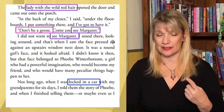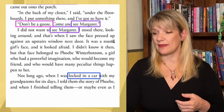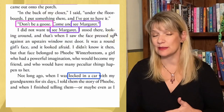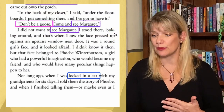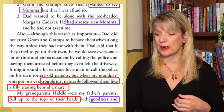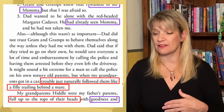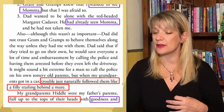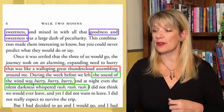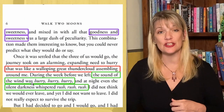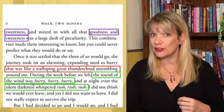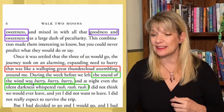So this lady with the wild red hair is named Margaret. We hear: 'Don't be a goose, come and see Margaret. I did not want to see Margaret.' That repetition adds humor. As does this little repetition when she describes her grandparents: 'My grandparents — my father's parents — were full up to the tops of their heads with goodness and sweetness. And mixed in with all that goodness and sweetness was a large dash of peculiarity.' We're getting that they're good and sweet, but also something else.